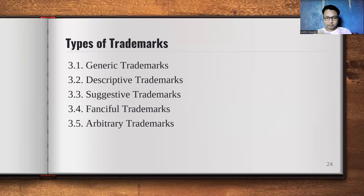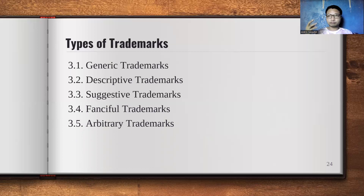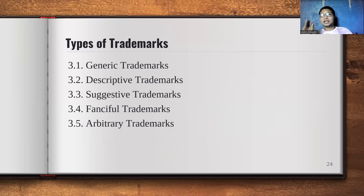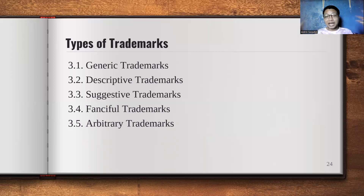Lastly, we have arbitrary trademarks — common concepts, words, or ideas known to many, but when used in a business context, their meaning moves away from their original meaning. For example, Apple — it is a common word everyone knows, but when used for a technology company, the connection between the fruit and technological devices is quite distant. That's arbitrary trademark — a common thing being used differently.